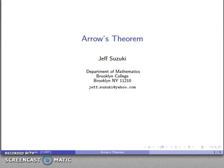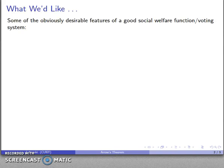Let's talk about an important result in voting theory called Arrow's Theorem. This is based on some of the things that we would like to have as a social welfare function or as a voting system. Let's consider what some of those really desirable features are going to be.